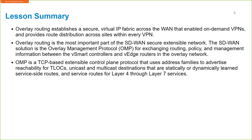In this lesson, we talked about overlay routing and how we use that to establish our virtual IP fabric across the WAN for our on-demand VPNs, providing route redistribution across our sites within those VPNs. We use this overlay management protocol to exchange much more than just routing policy information — including management information between the V-Edge devices and the V-Smart controllers. It's a TCP-based extensible control plane protocol using address families to provide reachability for the transport locations, with unicast and multicast destinations that can be statically or dynamically learned. We'll see you in the next lesson.